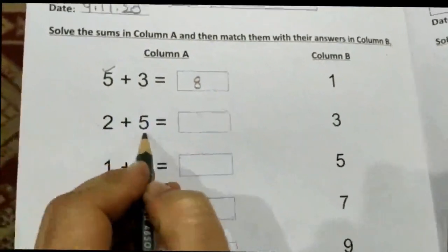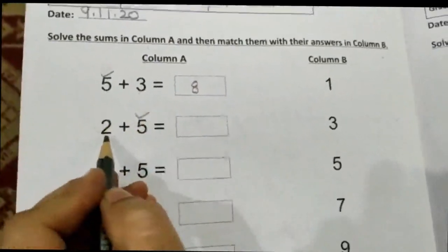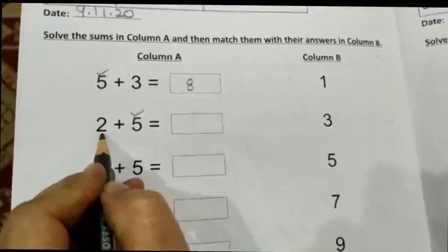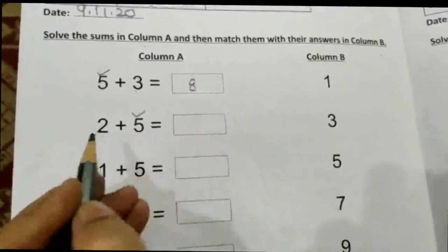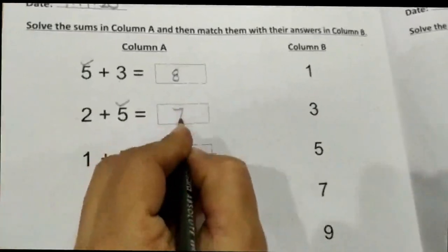2 plus 5 equals: take the bigger number, lock it in your mind, take out two fingers, and count. 6, 7.